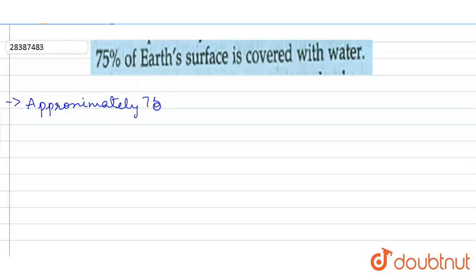Approximately 75% of Earth's surface is covered with water.